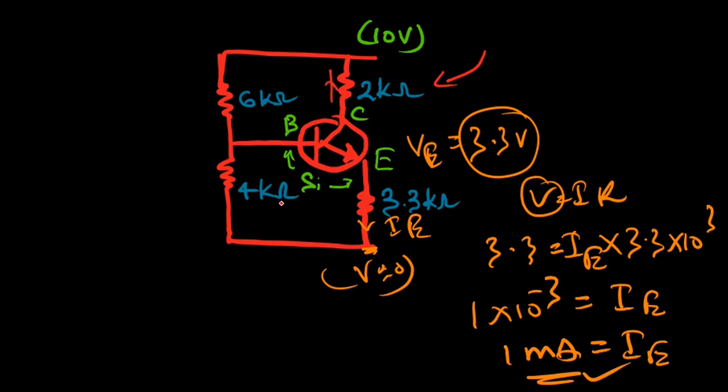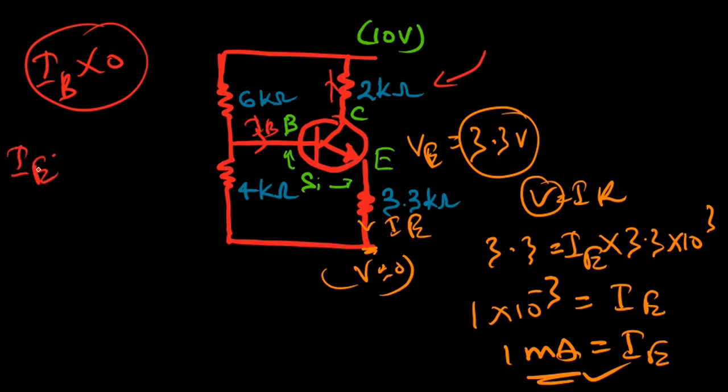We have IE, now moving to finding IC current. There are a couple of things we need to be clear about. We cannot find IB current because no data is given for IB current. One thing we know is IE equals IC plus IB, and beta equals IC over IB is also not given, so we have no data to find IB.